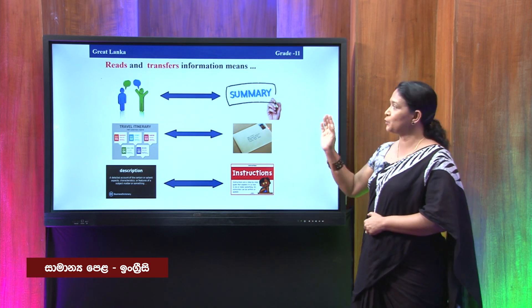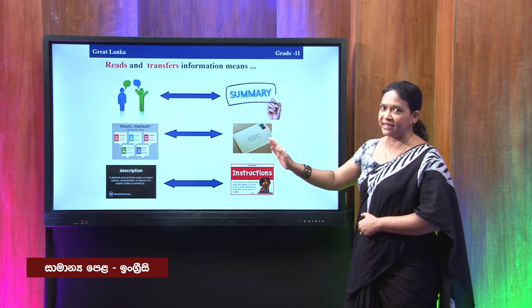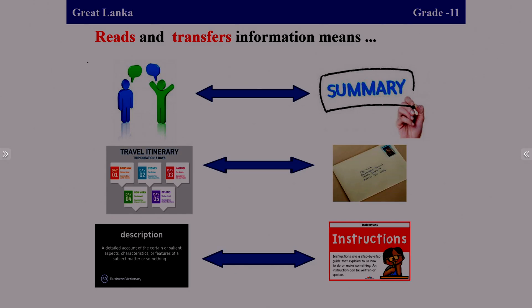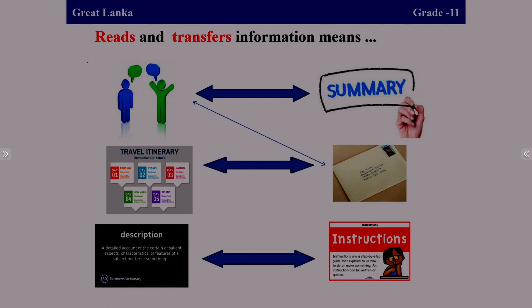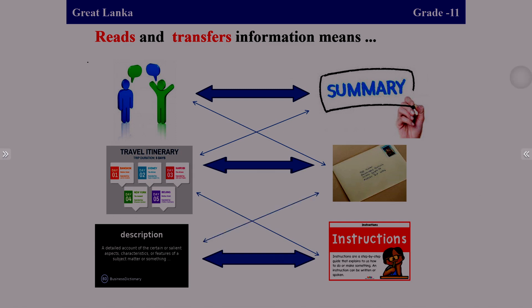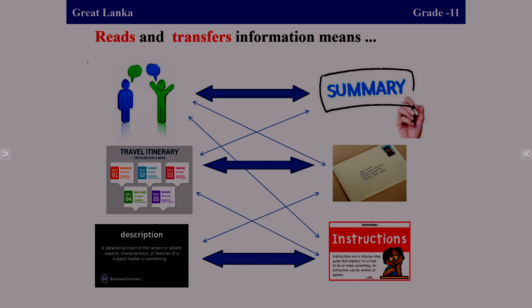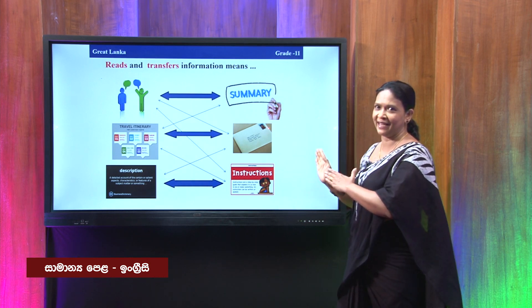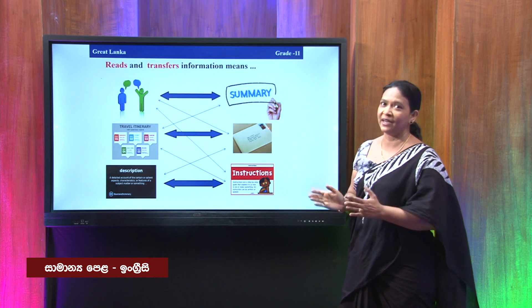It is not only from dialogue to summary, or itinerary to letter, or description to instruction that this transferring of information happens. It is a complex thing. It can be from a dialogue to a letter, from itinerary to a summary, from description to a letter, or from instruction to a dialogue. I have used double-headed arrows — that means this can happen either way. Transferring information can happen in both directions.